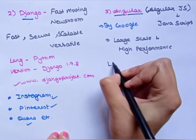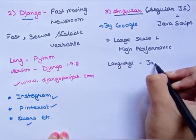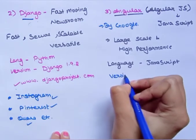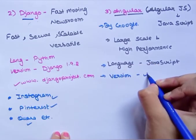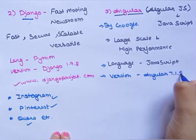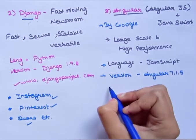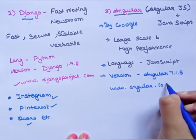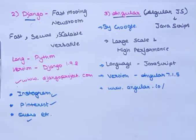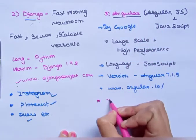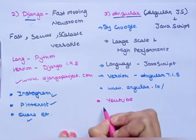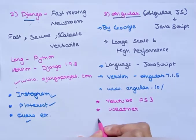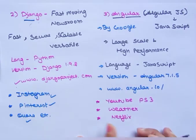There are a very huge number of web applications built using AngularJS. The language used is JavaScript. Its latest version is Angular 1.1.5, and you can get it through www.angular.io. Websites that use Angular include YouTube (especially for PS3), Weather, and Netflix.